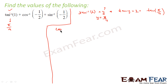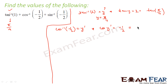Similarly, for cos inverse of minus 1/2, I will assume this as y dash. So this becomes cos(y dash) equals minus 1/2. Now, minus 1/2 I have to write in the form of cos. This becomes cos(2π/3), because minus 1/2 is nothing but cos(2π/3).